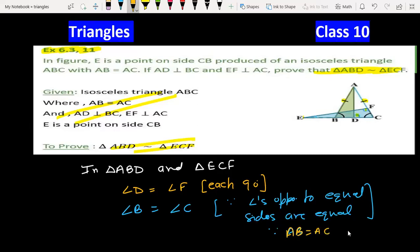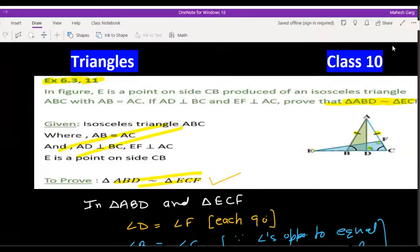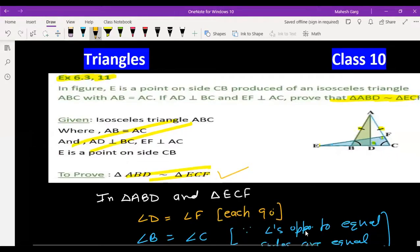Therefore, triangle ABD is similar to triangle ECF by AA criterion. That's it. I hope everyone understands. Tell me if anyone has any doubts.